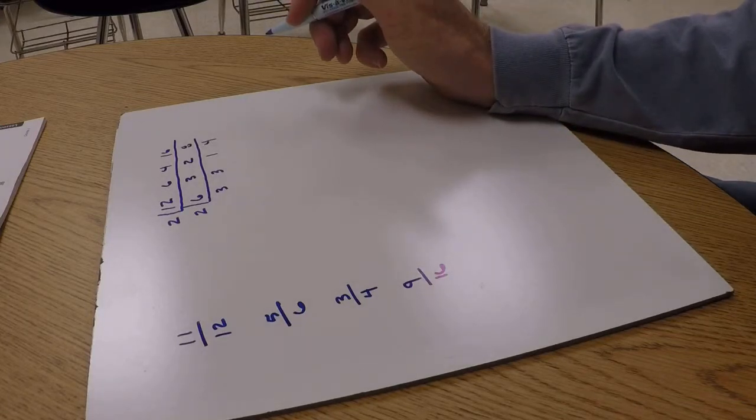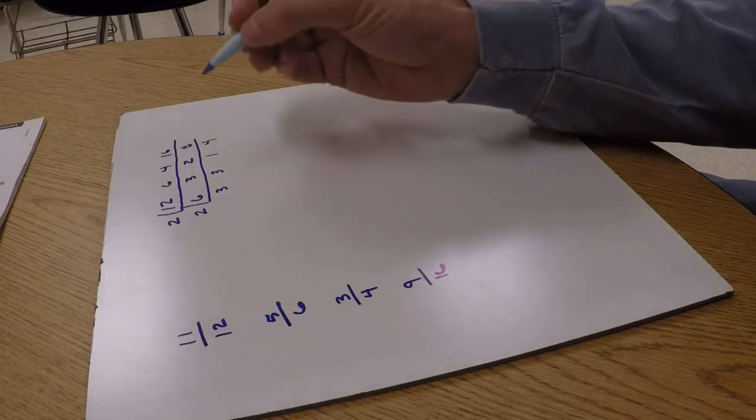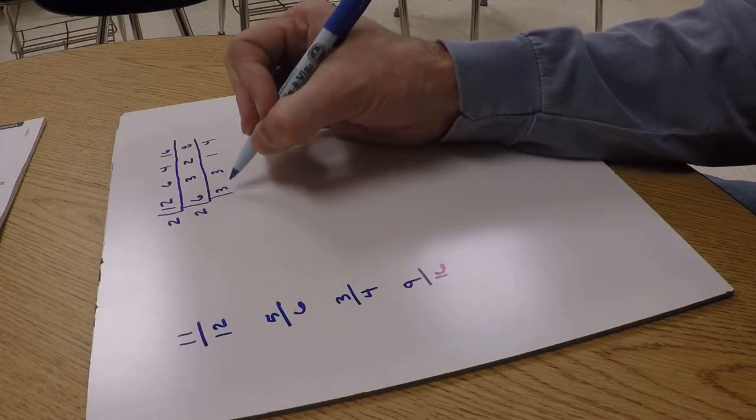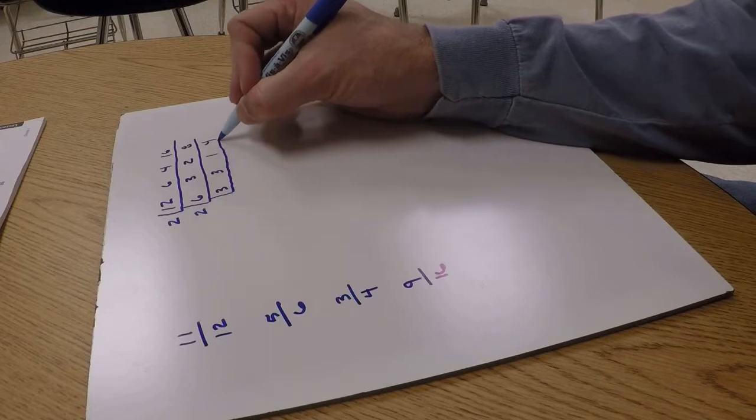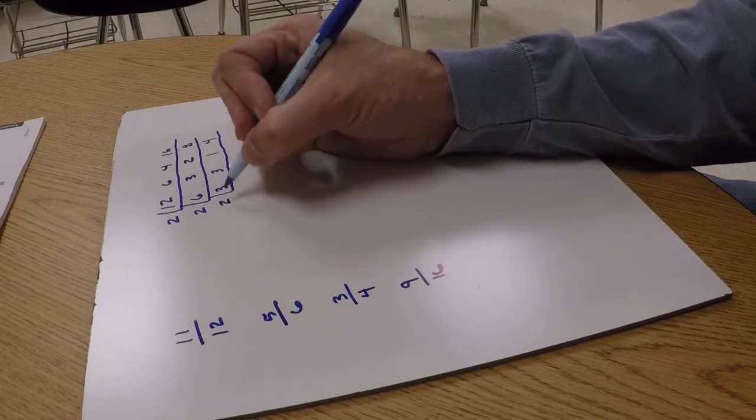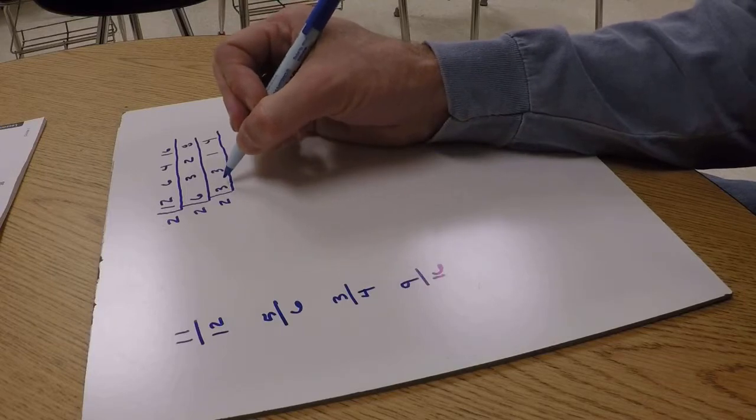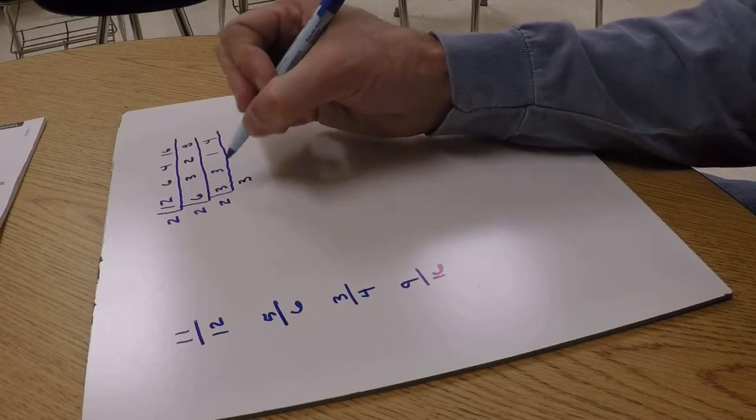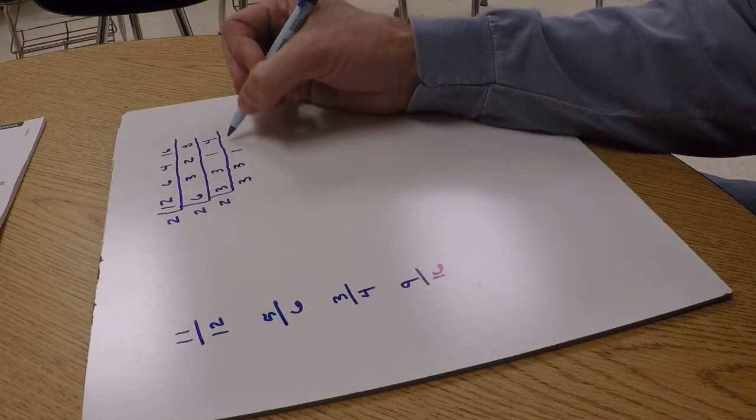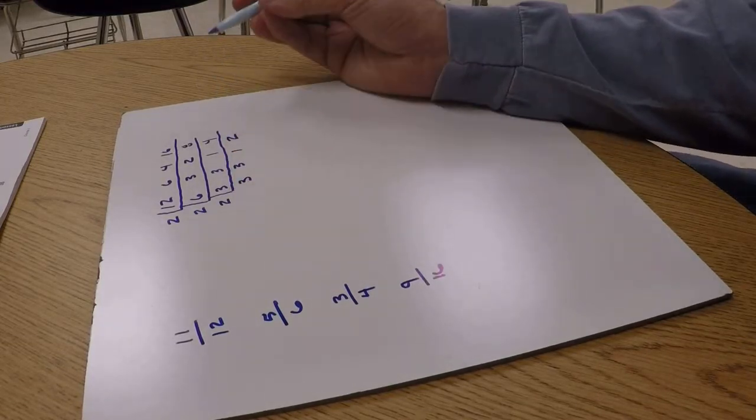Here I've got a situation where that 4 there, I need to put 2 into it again to get all prime numbers in the bottom. So 2 won't go into 3 evenly, so I'm just going to drop it straight down. Same thing here. The 1's going to go straight down. 2 will go into 4, 2 times. And now I'm finished.